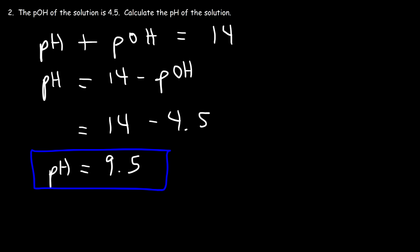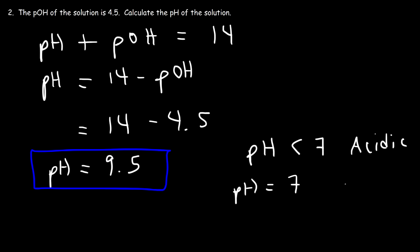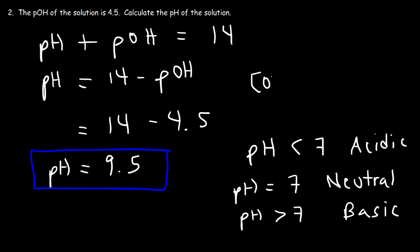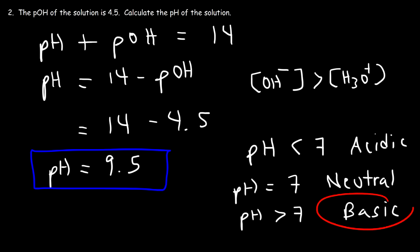Here's a question: at 25 degrees Celsius, would you say the solution is acidic, basic, or neutral? If the pH is less than 7, we have an acidic solution. If the pH is equal to 7 at 25 degrees Celsius, the solution is neutral. But in our example, because the pH is greater than 7, we have a basic solution. In a basic solution, the amount of hydroxide is greater than the amount of hydronium ions. So 9.5 is the answer for this problem.